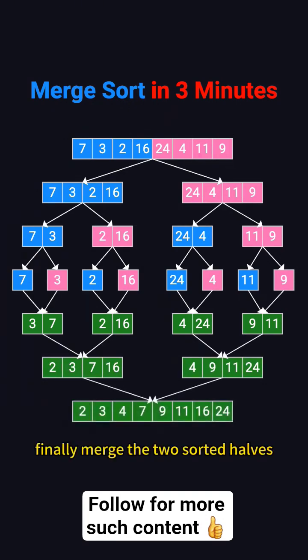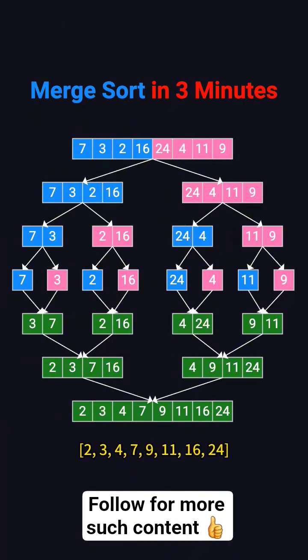Finally, merge the two sorted halves to produce the fully sorted array: 2, 3, 4, 7, 9, 11, 16, 24.